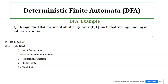If the string is ending with 'ab', then before 'ab' any combination of a's and b's is accepted. Similarly, if the string is ending with 'ba', any combination before 'ba' is acceptable. We have to take care of both ending conditions simultaneously. So one path will go towards strings ending with 'ab' and another path towards strings ending with 'ba'.